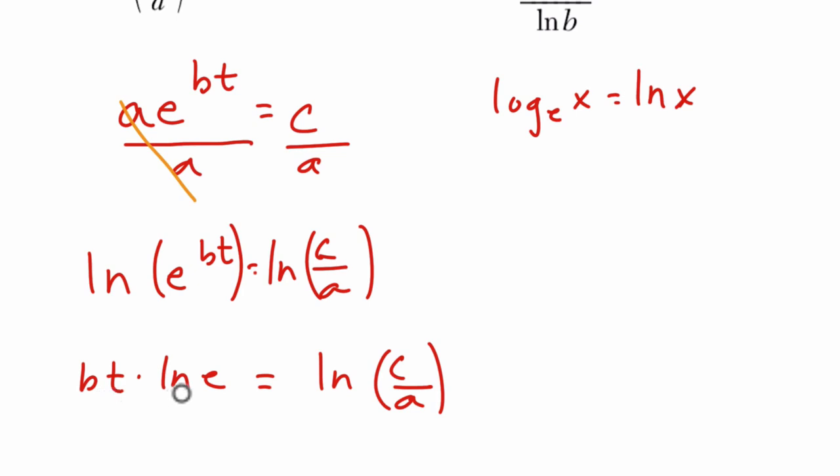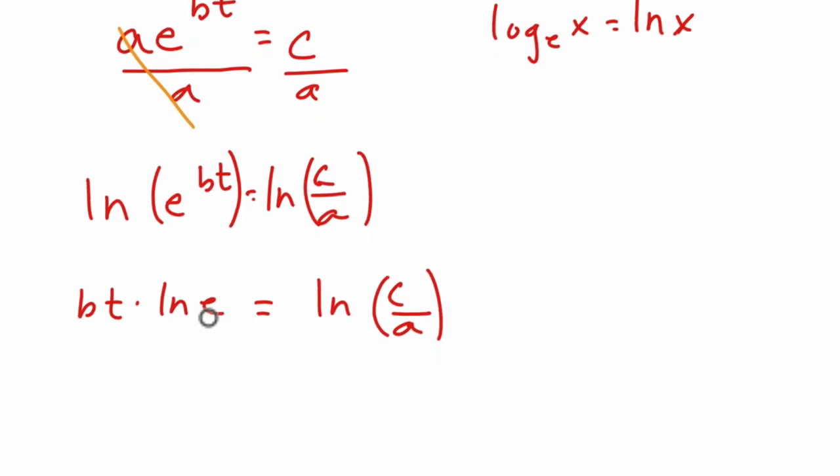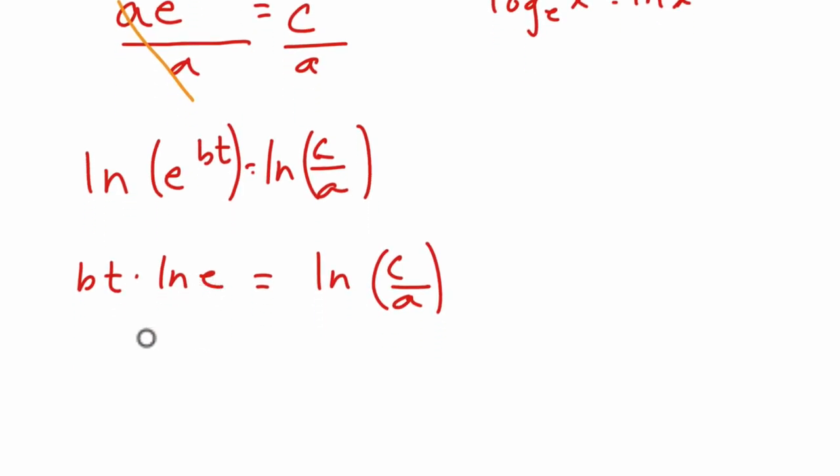Then we want to get t by itself. So first of all, the natural log of e is just one. E to what power is itself? One. And then if we divide both sides by b, we should have our answer. Let's see what we have. Natural log of c over a, and then divided by b.